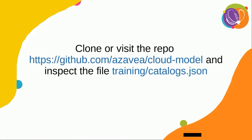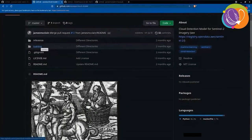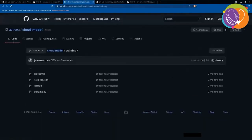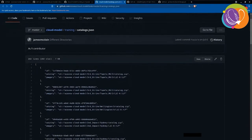If you would like to access this dataset, probably the easiest way is to clone or visit the GitHub repository listed here. There is a file within the repository called catalogs.json, and basically that contains the locations on S3 — it gives the locations of where the imagery is and where the labels are.